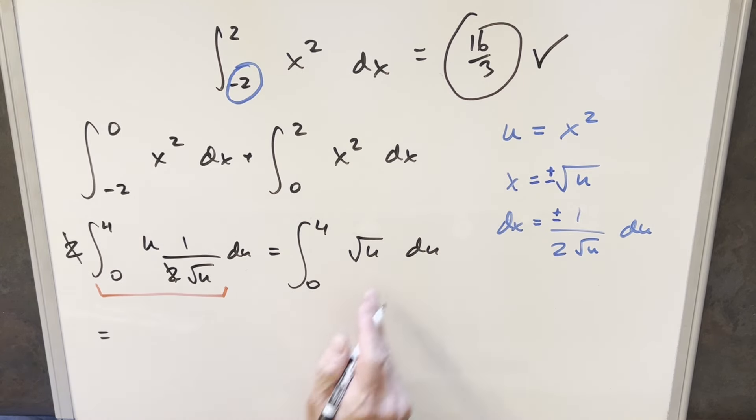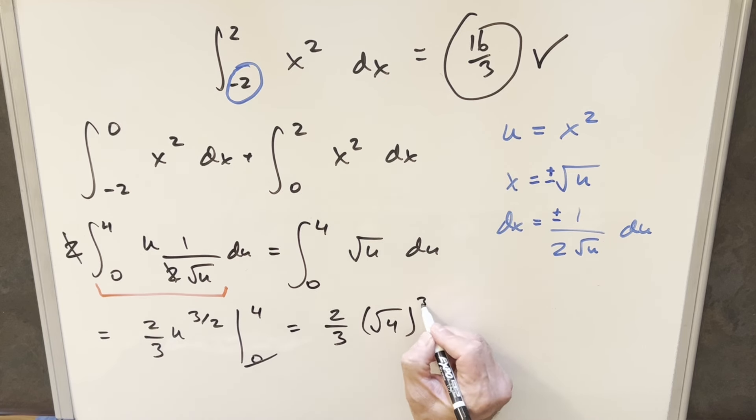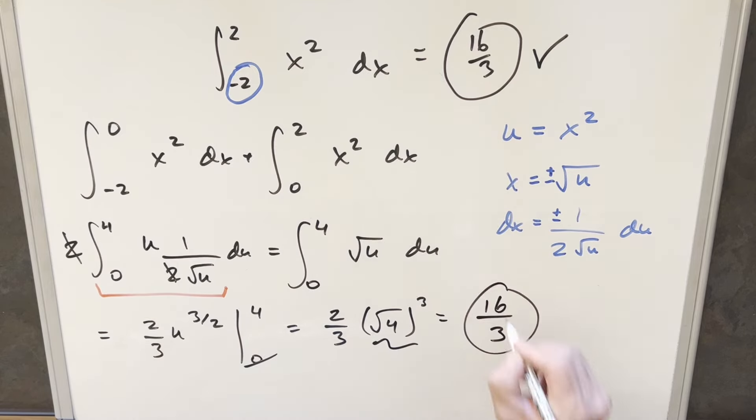Go ahead and integrate this thing with power rule. This is going to become u three halves, two thirds in front, evaluated from zero to four. Evaluating at zero is going to be nothing. I just need to plug in four. So we're going to end up with two thirds. Let's kind of break it up like, I guess I can write like this, right? Square root of four cubed. Well, the square root of four is two cubed is going to be eight times two thirds gives me my final solution of 16 over three.